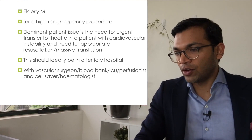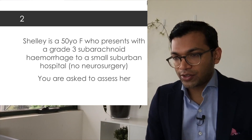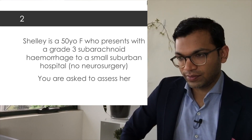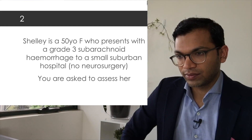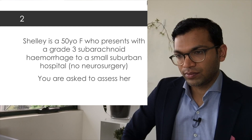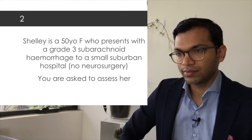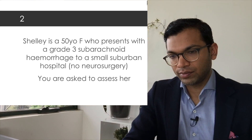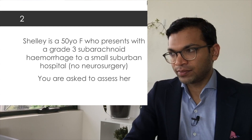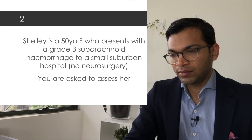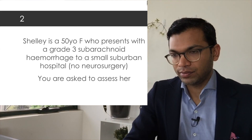Second case: Shelly is a 50-year-old female presenting with a grade three subarachnoid haemorrhage to a small suburban hospital with no neurosurgery, and you're asked to assess her. Summary: 50-year-old female, high risk of deterioration, presenting for an emergency procedure at a hospital not equipped to deal with her as it lacks neurosurgery. Dominant patient issue is mitigating rapidly rising intracranial pressure and transferring her to a safe location. I'd need an intensivist, a second anaesthetist, a transport service, and a receiving tertiary centre with neurosurgery.